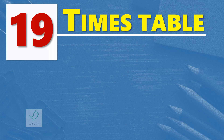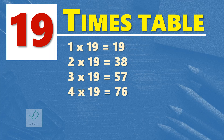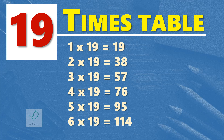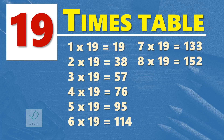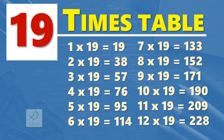19 times table. One time 19 is 19. Two times 19 are 38. Three times 19 are 57. Four times 19 are 76. Five times 19 are 95. Six times 19 are 114. Seven times 19 are 133. Eight times 19 are 152. Nine times 19 are 171. Ten times 19 are 190. Eleven times 19 are 209. Twelve times 19 are 228.